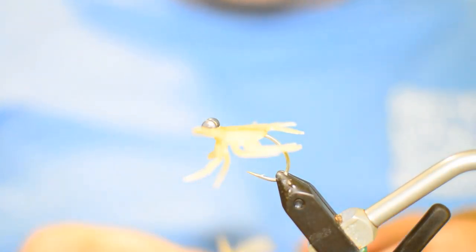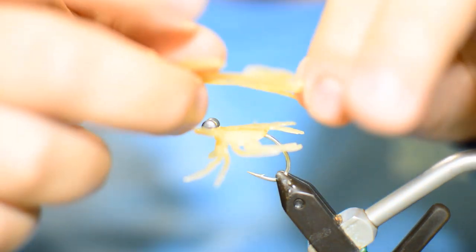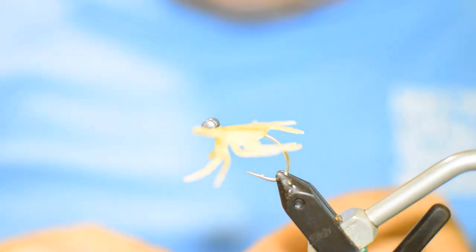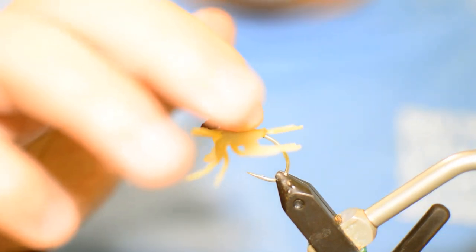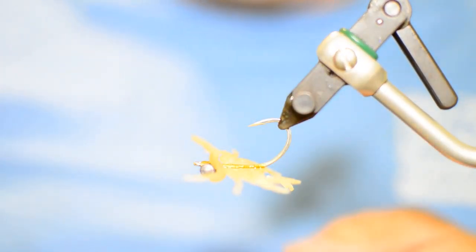You want the claws facing back. This is going to be a fighting style crab, so the claws will be faced back, and we'll let that glue set for a second. You can also tie it to where the claws come off the side of the crab, more of a fleeing crab style. I just have a couple other fleeing crab patterns that I tie that I like. So I wanted another fighting crab fly in my arsenal, so we just tied this one straight back. But you could do the same thing, just tying it parallel to the hook.